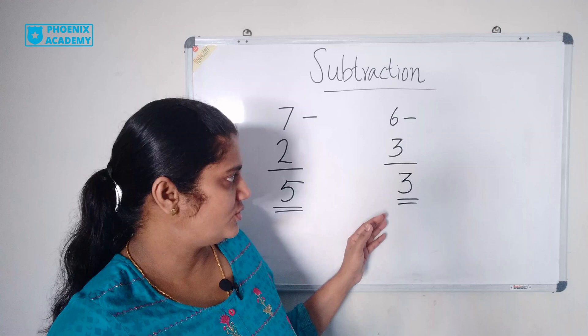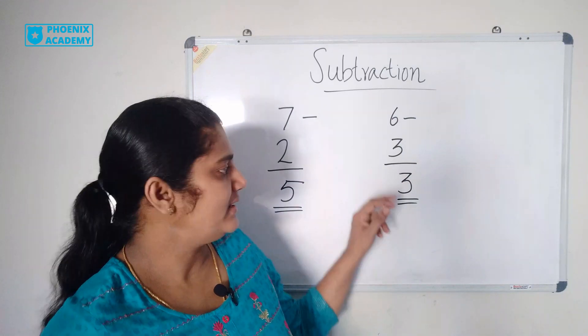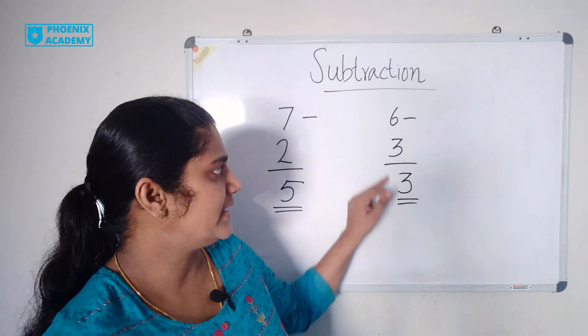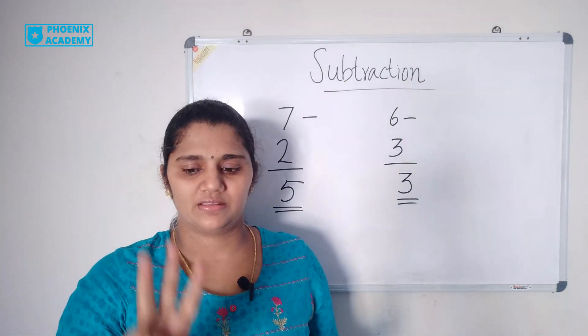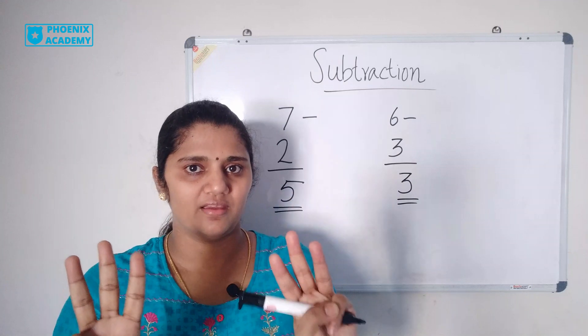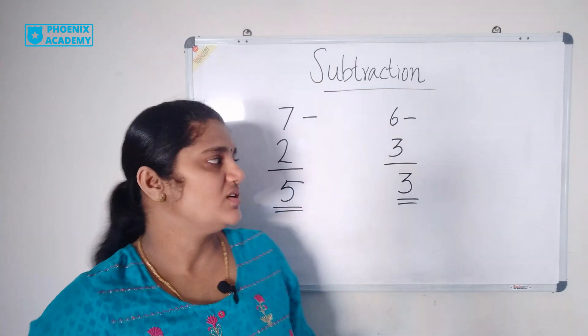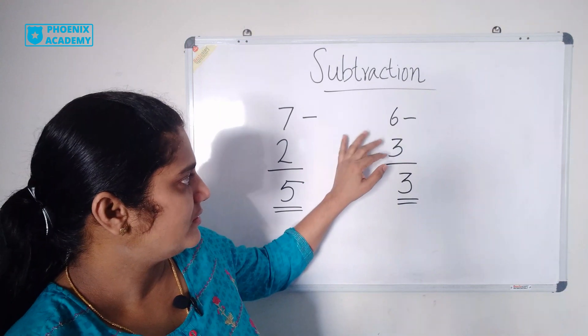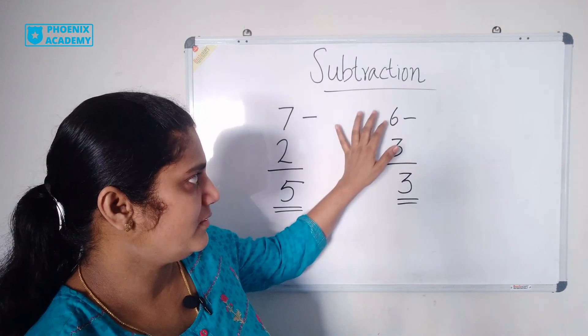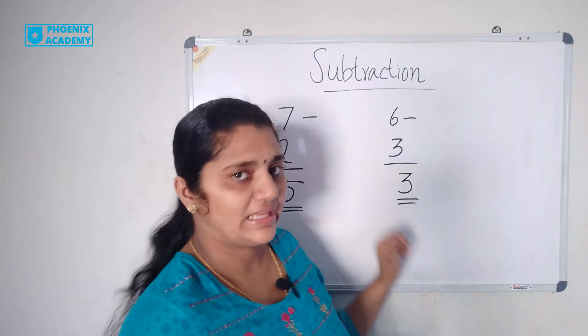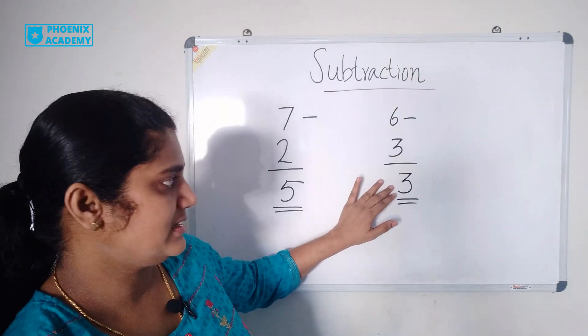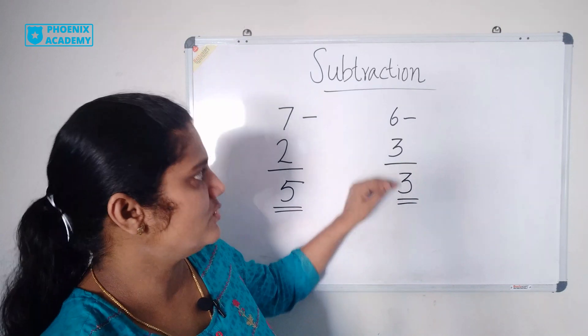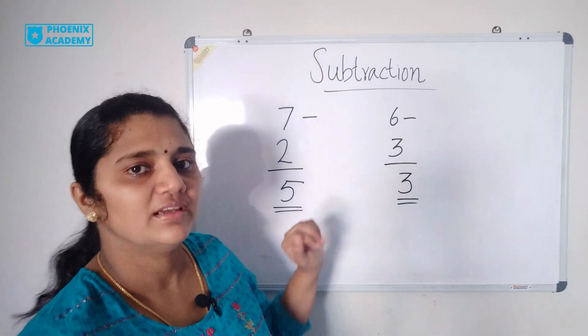To check whether your answer is correct, you add this answer plus the smaller number. 3 plus 3. What is the answer? 6. So your answer is correct. If you subtract a number from another number, you will get a result. This result is called difference. So the difference of 6 and 3 is 3.